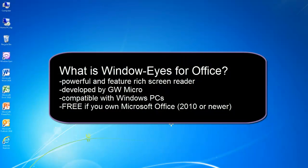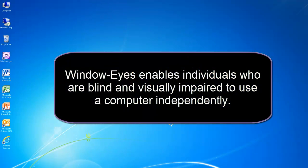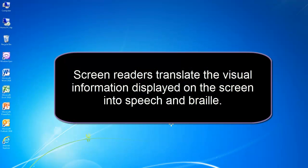WindowWise for Office is a powerful screen reader developed by GWMicro and can be downloaded free of charge and used by anyone who has Microsoft Office 2010 or later installed on their Windows PC. WindowWise enables people who are blind and visually impaired to use a computer independently by translating the visual information displayed on the screen into accessible speech and braille output.